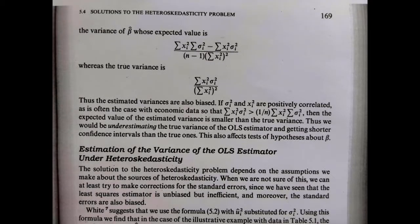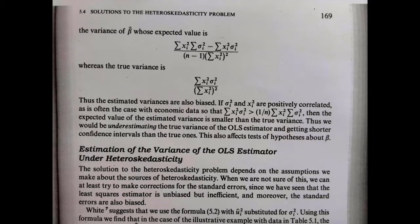This next extract is taken from Modala's textbook. He goes into a little bit more detail, in that first of all he defines the variance of the OLS estimator and its expected value in the top equation. Then he compares that with the true variance, and restates the property we want to investigate: that if the variance of the error term and the square of the x variable are positively correlated, then we'll get an underestimate of the true variance. He also provides a more detailed condition: that the sum of xi squared sigma i squared must be greater than 1 over n multiplied by the sum of xi squared multiplied by the sum of sigma i squared. But it's not clear exactly where this result comes from.